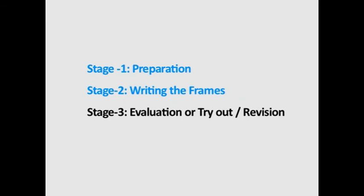The last stage, Stage 3, is evaluation or try-out and revision. This is the last stage of the development of the program. It helps the programmer to assess whether the program is an effective instructional tool or not. When the first draft is ready, it should be tried out on several persons and re-edited. The original frames should be typed and their responses given on the back page. It should be given to a small group of students to see where mistakes are being committed. This will facilitate revision of the frames later.